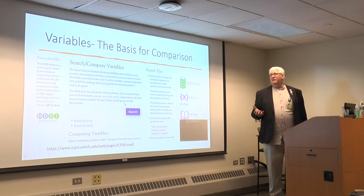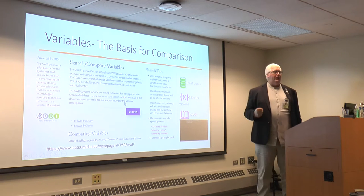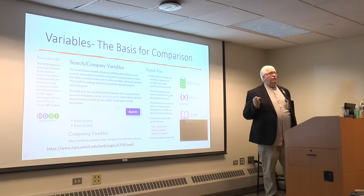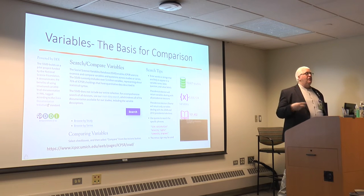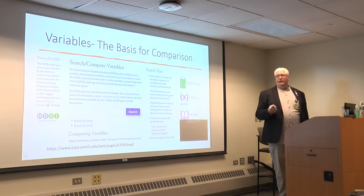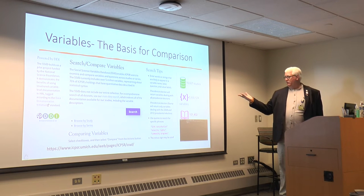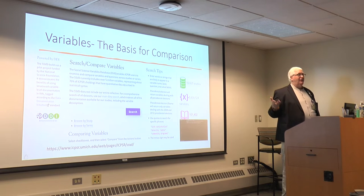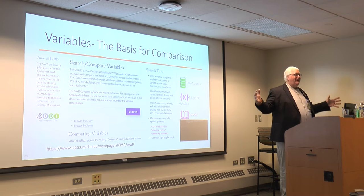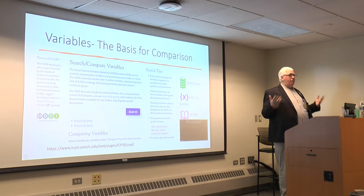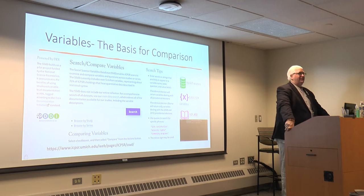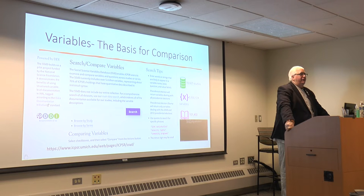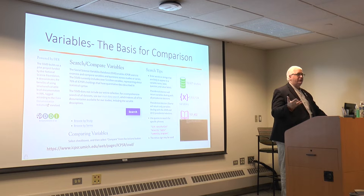Variables are the next step — metadata is nice, but variables are better. Being able to look at individual variables within a study and then across studies is where we start to get progress in moving towards common data elements. We've got almost six million variables identified at ICPSR. The variable database has been an incredible success story and gives us a foundation upon which we can grow and evolve.